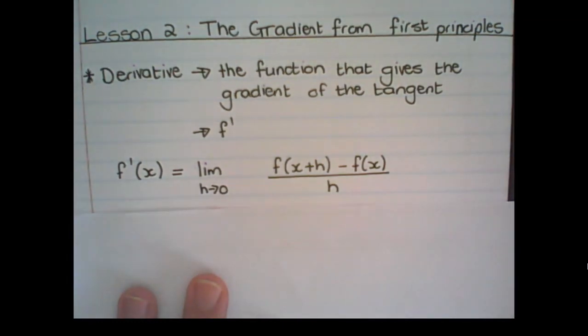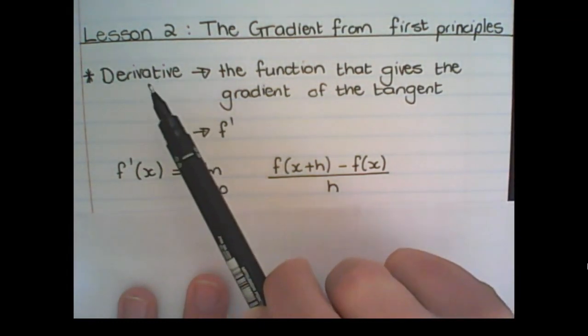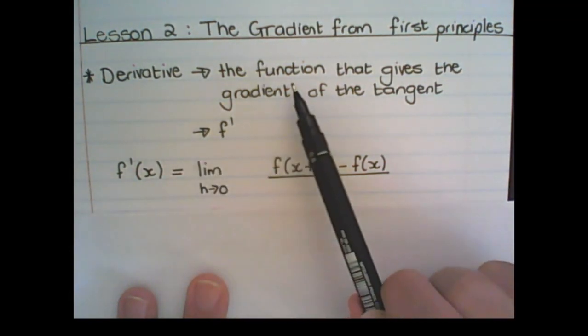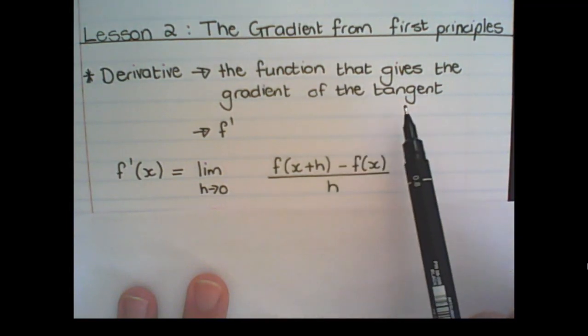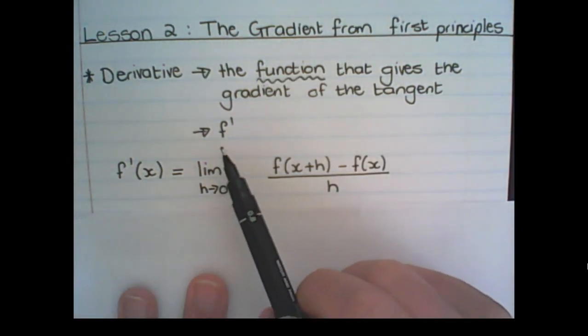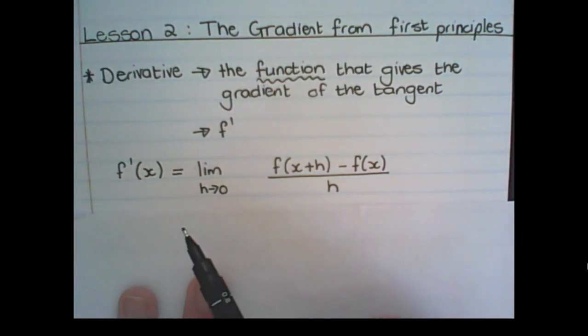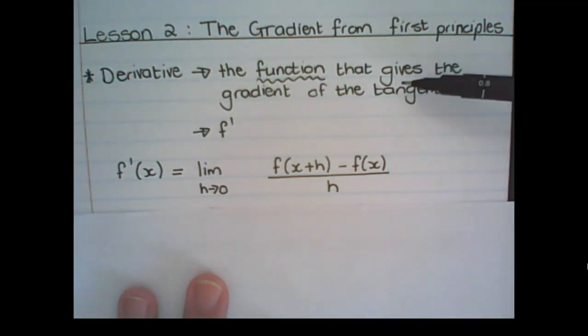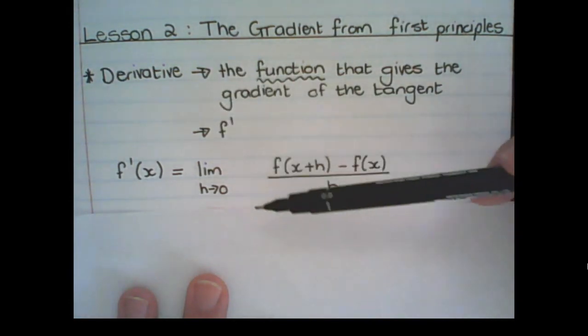So in calculus, we find the word derivative. And what the derivative is? It is a function that gives the gradient of a tangent. And the notation for the derivative is f prime. Don't stress too much about what this means right now. We are going to today discover the formula for the derivative.